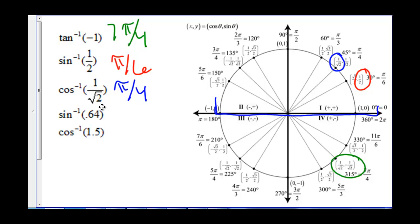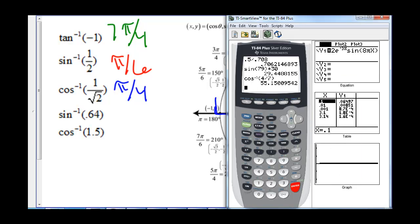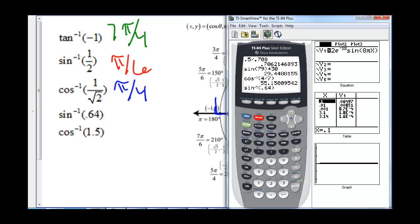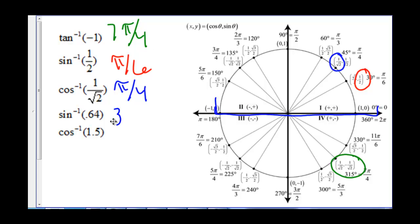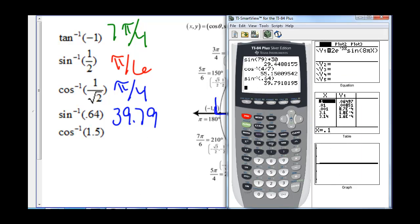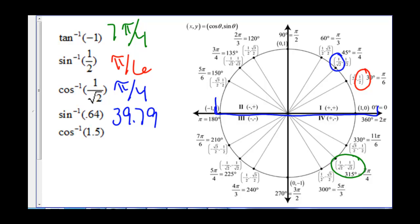Sometimes we have numbers that are not so friendly. For inverse sine of 0.64, we use a calculator — making sure the mode is in degrees — and that gives us 39.79 degrees. For inverse cosine of 1.5, we get an error, because 1.5 is greater than 1 and not inside our domain of negative 1 to 1, so this value is not defined.